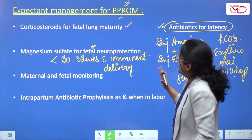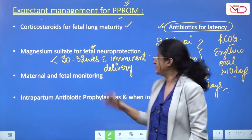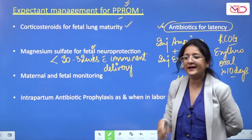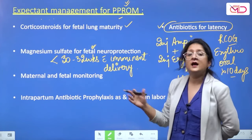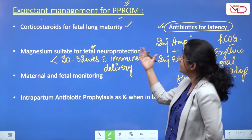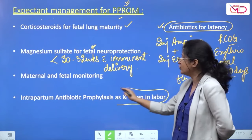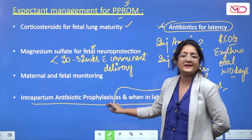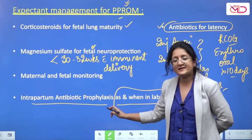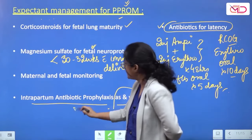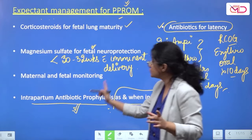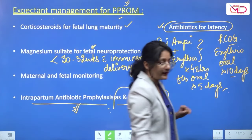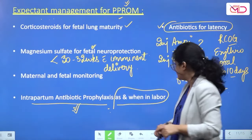As and when you decide to deliver during expectant management — for example if fever develops — intrapartum antibiotic prophylaxis must be given. Since a risk-based approach is followed, intrapartum antibiotic prophylaxis is given with preterm pre-labour rupture of membranes as and when the patient goes into labour. This is distinct from antibiotics for latency.